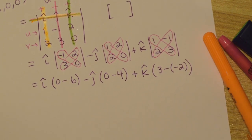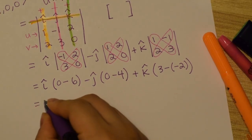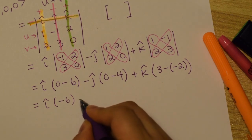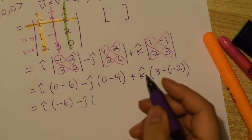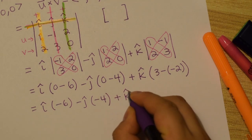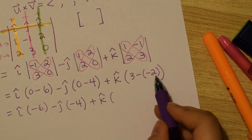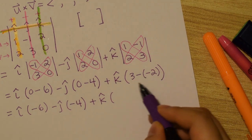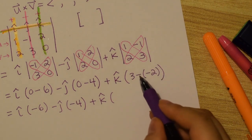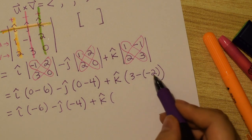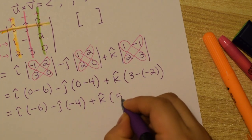And now we just clean this up. So we have i hat 0 minus 6 is negative 6 minus j hat. 0 minus 4 is negative 4 plus k hat. 3 minus minus 2 is 3 plus 2. And you might remember that from algebra or you can just think of it as negative 1 times negative 2 is positive 2. So either way, 3 plus 2 is 5.